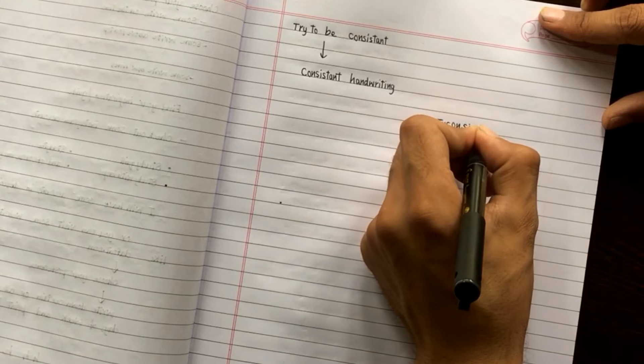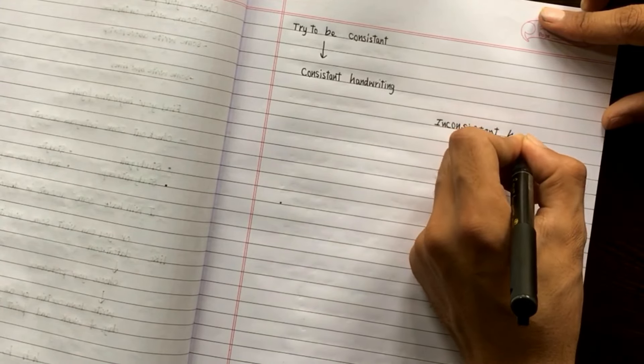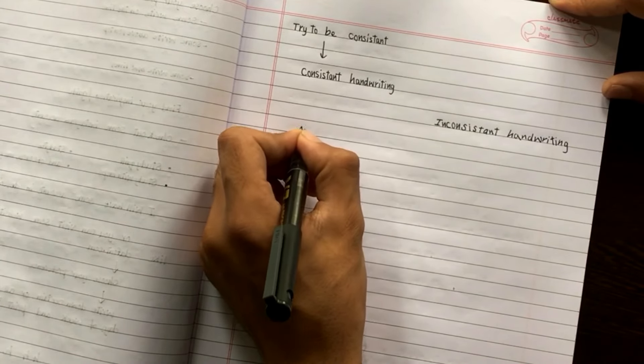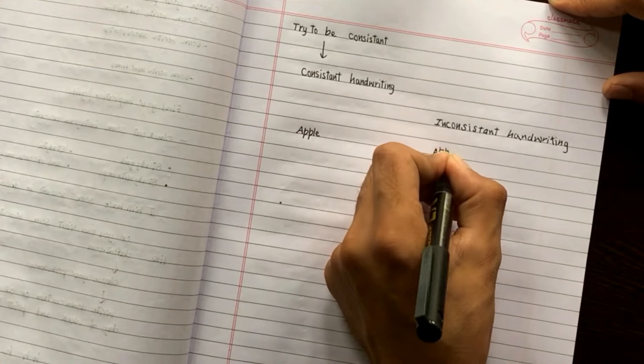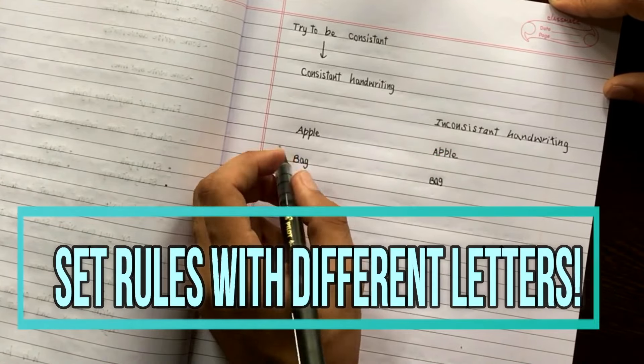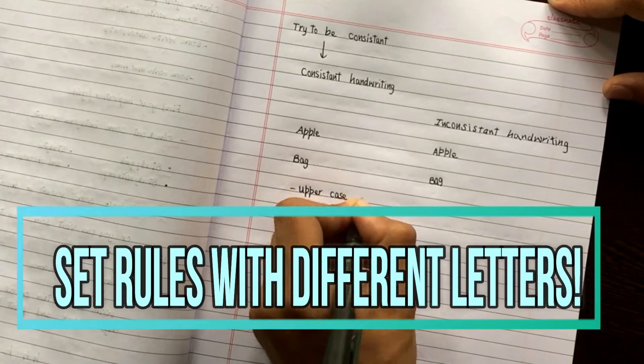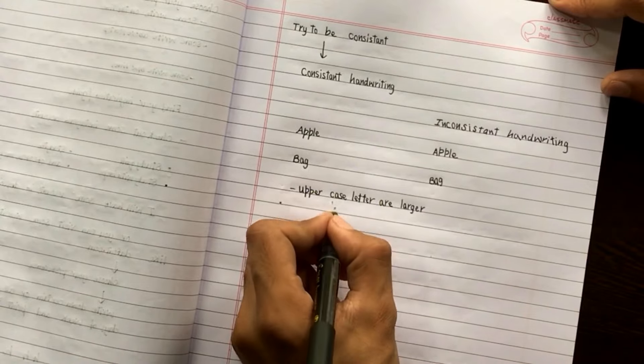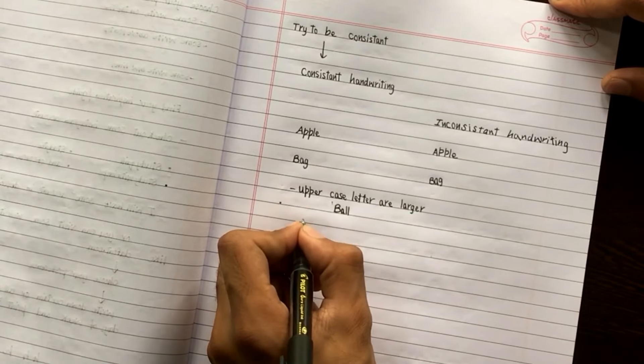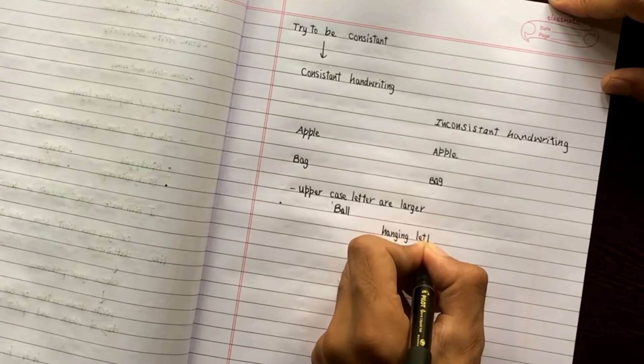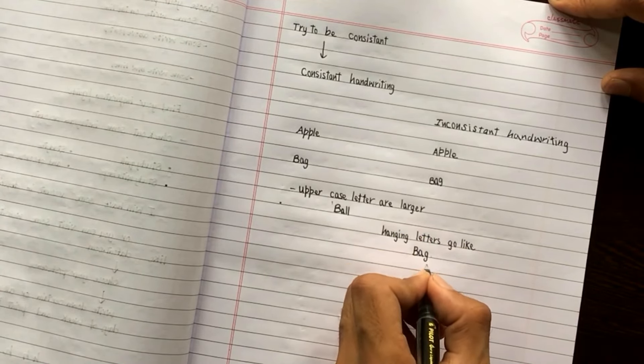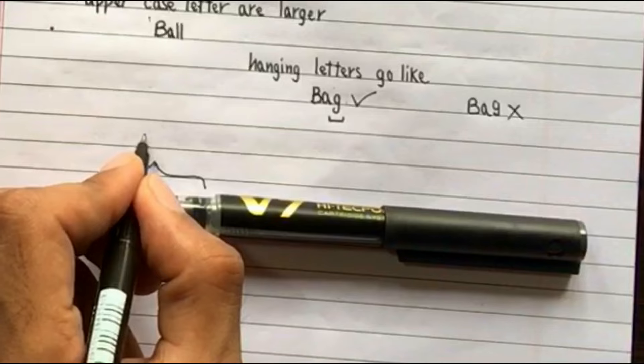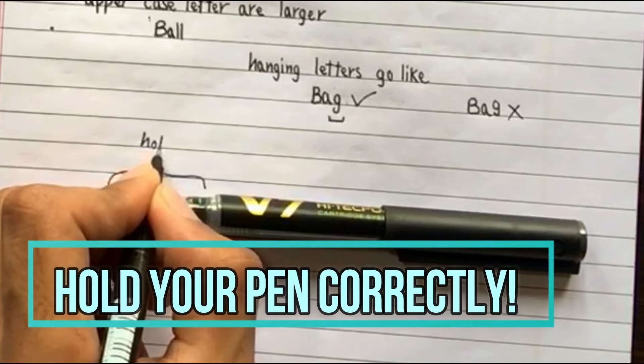The inconsistency should be avoided at every cost. On this side I am showing you certain words which are consistently written and others are written inconsistently. For different letters there are different rules. Like for uppercase letters, we have to make them large or write them large. Hanging letters go like this, as you can see, not like this.